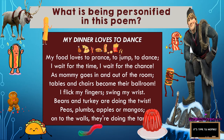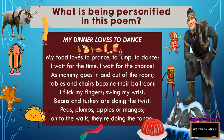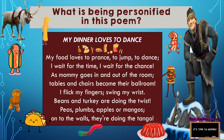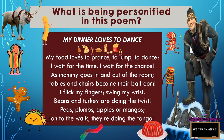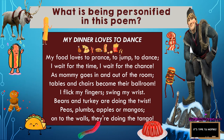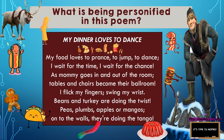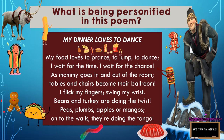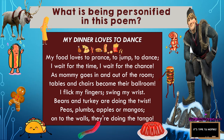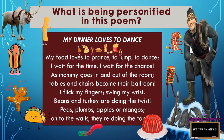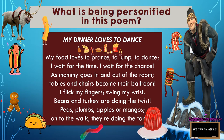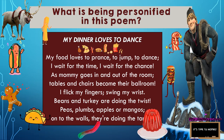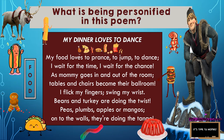I have another poem for you. This one was written by a kid around your age, and it's titled 'My Dinner Loves to Dance.' 'My foot loves to prance, to jump, to dance. I wait for the time, I wait for the chance. As mommy goes in and out of the room, tables and chairs become their ballroom. I flick my fingers, swing my wrist. Beans and turkey are doing the twist. Peas, plums, apples or mangoes — onto the walls, they're doing the tango.' Can you tell me what object is being personified in this poem? The answer is food!